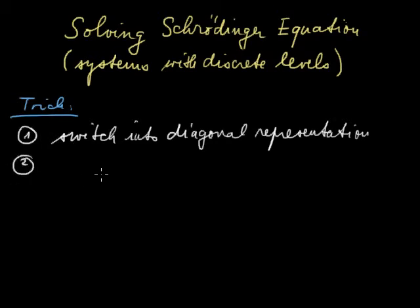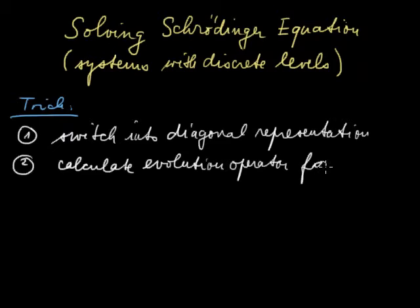Then the second step, after we find this, will be we will calculate evolution operator. I will talk about that a little bit in detail. We will calculate the dynamics, basically, of the system for some short time step dt. So, calculate evolution operator for a time step delta t. This will be finite, it will be some resolution that we want to see the dynamics in, one femtosecond or something like that.